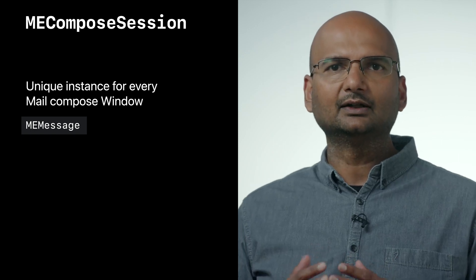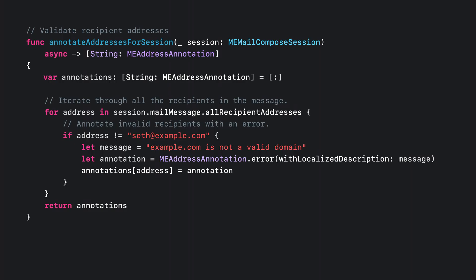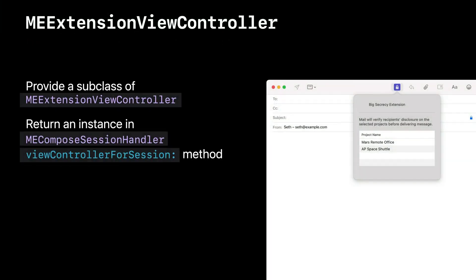Let's look at an example of how you can do this to annotate recipient email addresses. Mail will call your compose session handler's annotate addresses for session whenever recipient addresses are edited. In this example, we are using the All Recipient Addresses property of ME Message to provide an error annotation for emails that are not matching seth@example.com. Compose Extensions can also provide a view controller that Mail will display in the compose window. Your view controller can provide valuable context to the user by customizing the view controller for each compose window. Your extension's view controller must be a subclass of ME Extension view controller. Mail will request an instance of this view controller by calling the view controller for session method of ME Compose Session Handler.